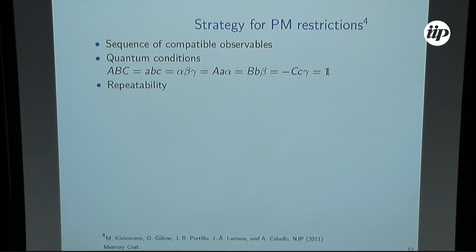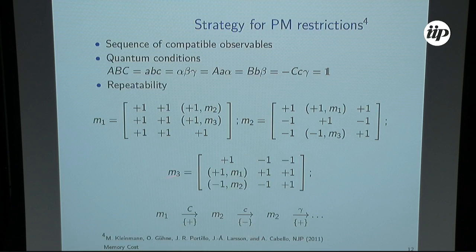A strategy like that for the Peres-Mermin restrictions was proposed in 2011. You look at sequences of compatible observables, quantum conditions on the operators so that the output of each measurement, the product of them is plus or minus one depending on the context, and repeatability. If you measure the same observable, you get the same output.